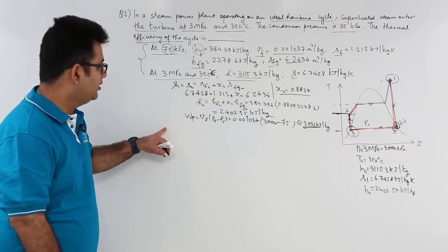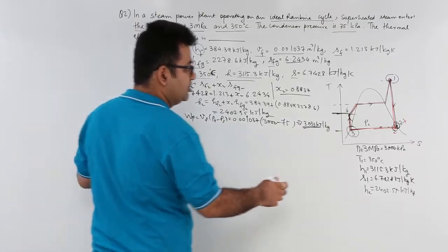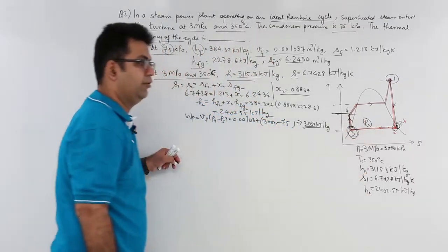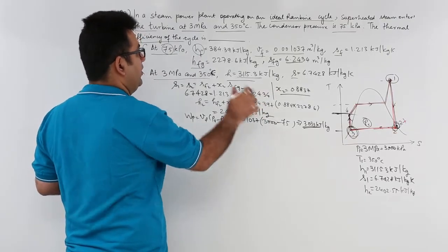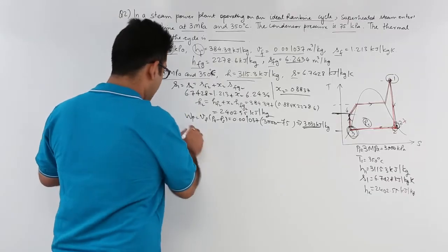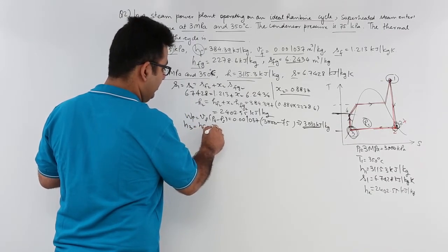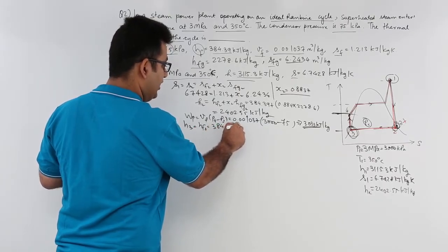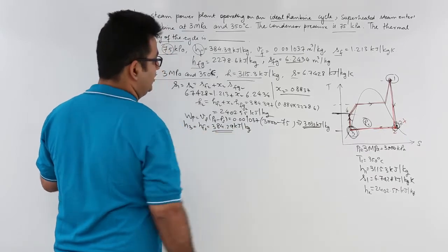After pump work, let us find out H3. H3 is corresponding to condenser pressure and it is a saturated liquid. Liquid enthalpy at 75 kPa is straight away this. So, H3 is equal to HF3 which is 384.39 kilojoule per kg.